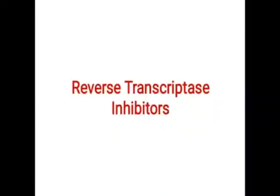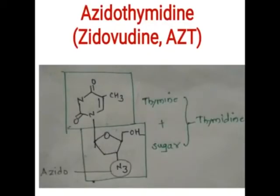The next class of antiviral agents is the reverse transcriptase inhibitors. There are two types: nucleoside reverse transcriptase inhibitors (NRTIs) and non-nucleoside reverse transcriptase inhibitors (NNRTIs). Drugs with a structure similar to nitrogenous bases are nucleosides; those without a similar structure to nucleotide bases are non-nucleoside reverse transcriptase inhibitors.